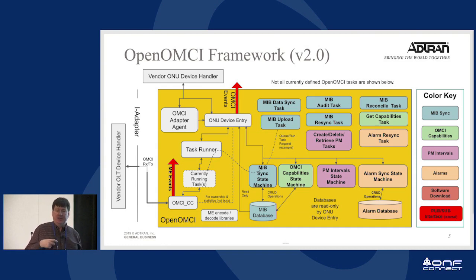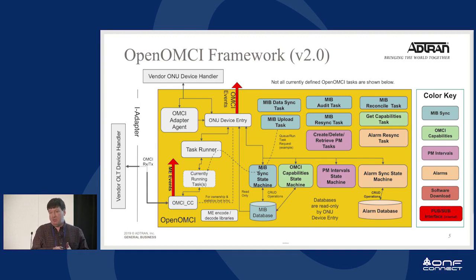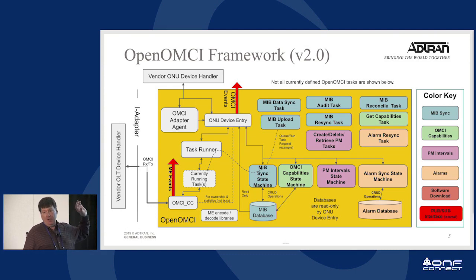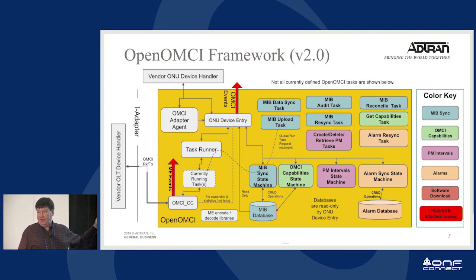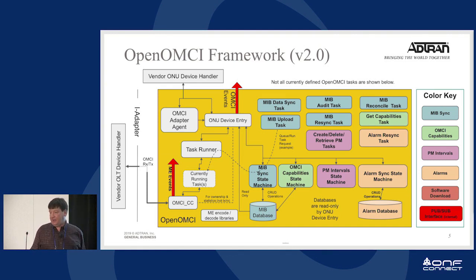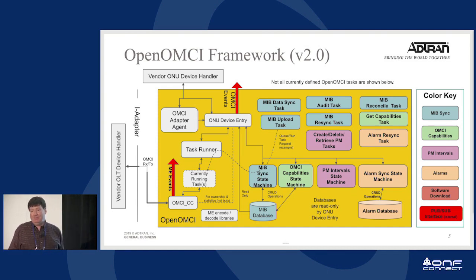The state machines and OpenOMCI tasks are class-based implementations. Within those task classes, a simple request might just send a single frame, whereas others might send several sequences. We've tried to break those down into smaller sequences so that for a specific ONU, you can either use the classes as-is, redefine the class with some parameter changes, change a single state machine, or change individual tasks. When the adapter comes up, it registers the actual classes it wishes to use, and that provides the framework.